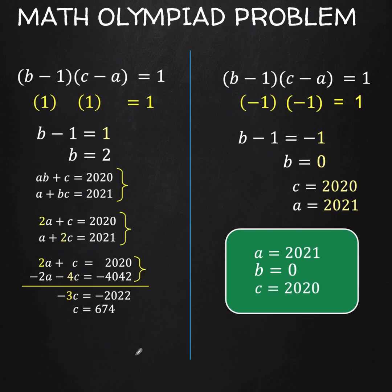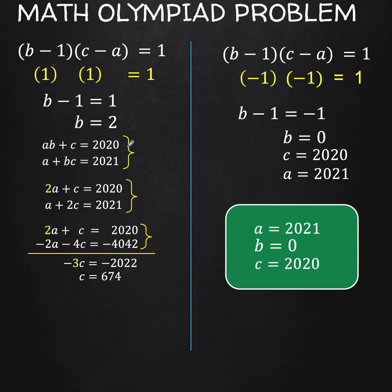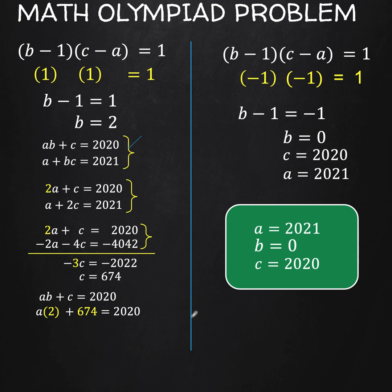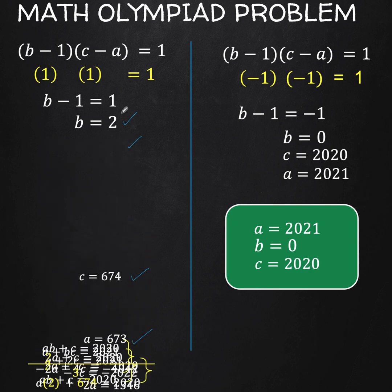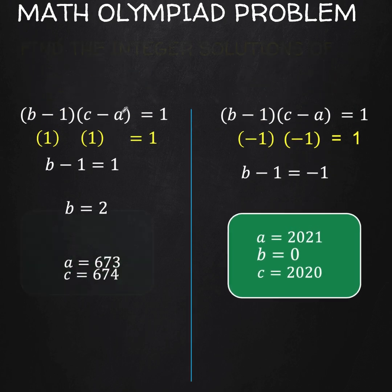To find A, take the first equation AB plus C equals 2020. Substituting B equals 2 and C equals 674, we get 2A plus 674 equals 2020. Subtracting 674 from both sides and dividing by 2, we find A equals 673. So we have all three values: A equals 673, B equals 2, and C equals 674.